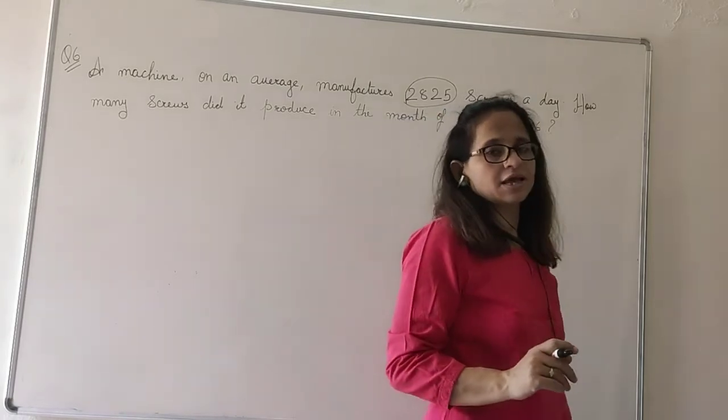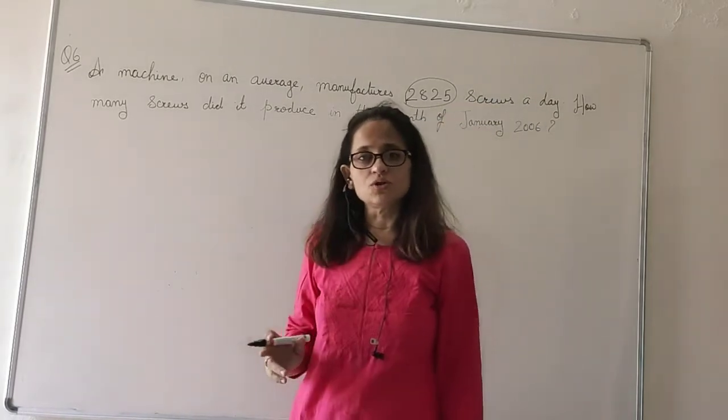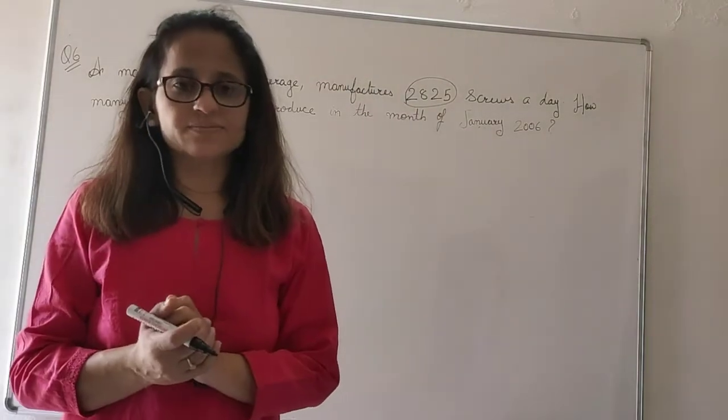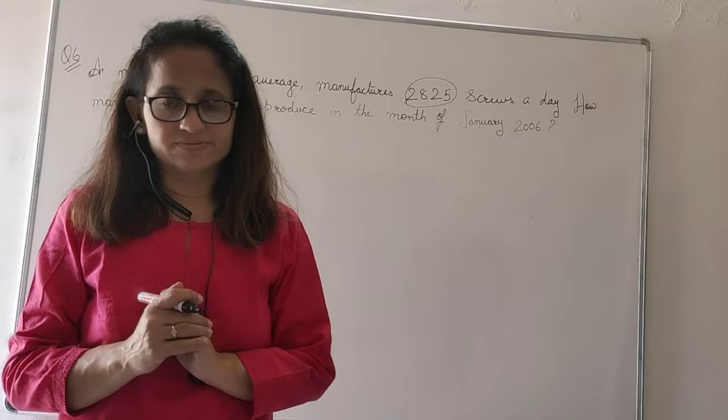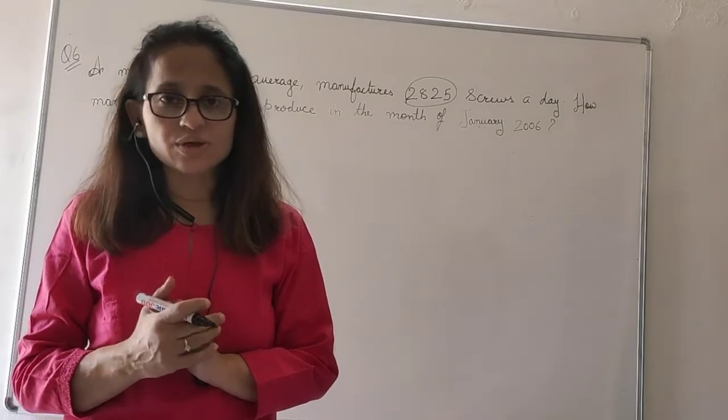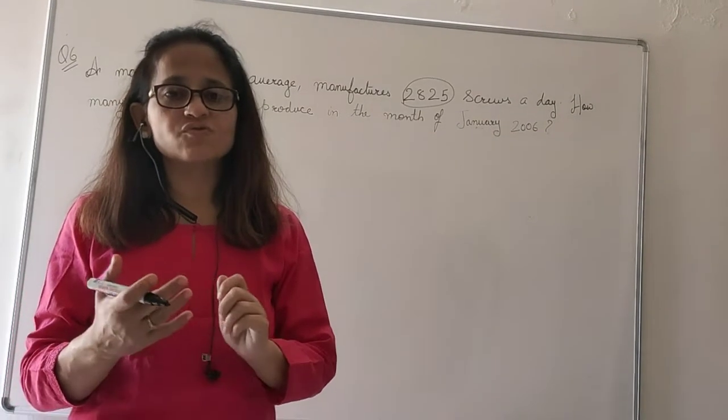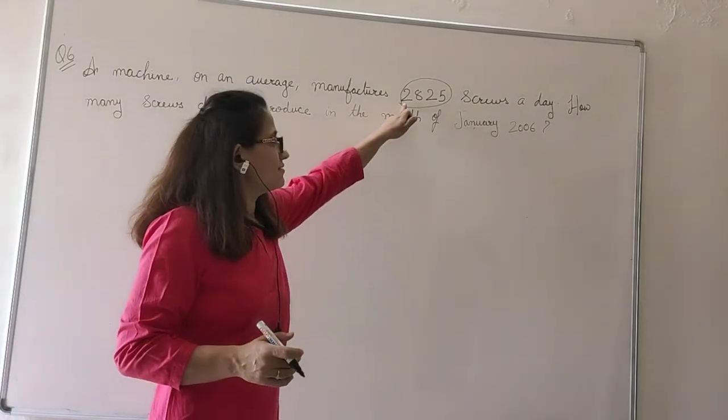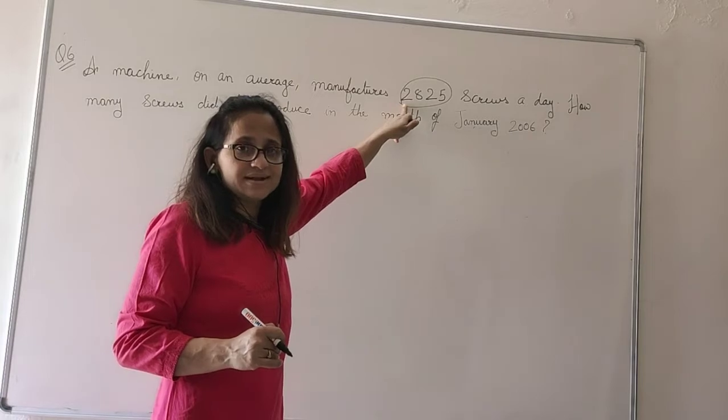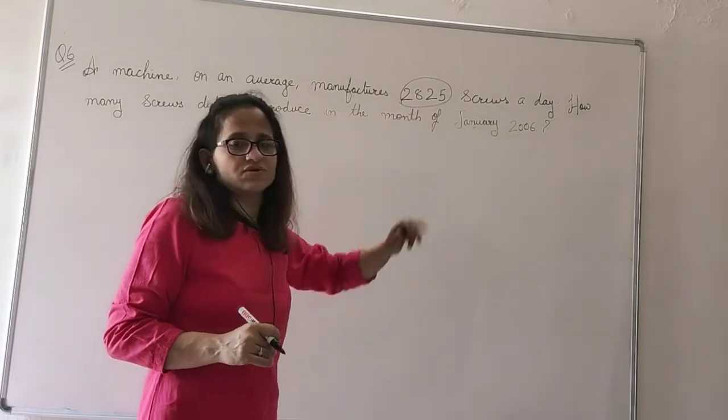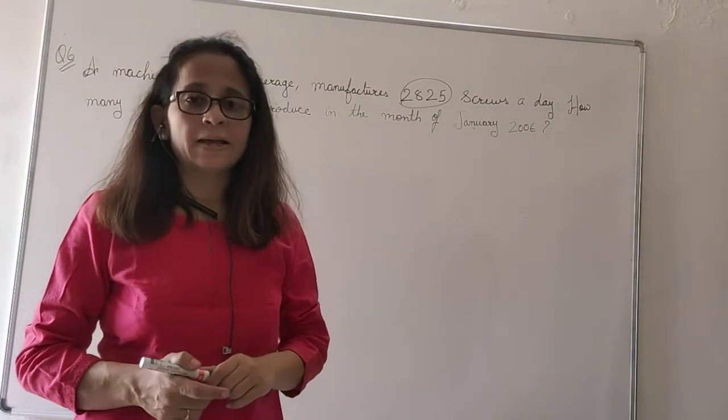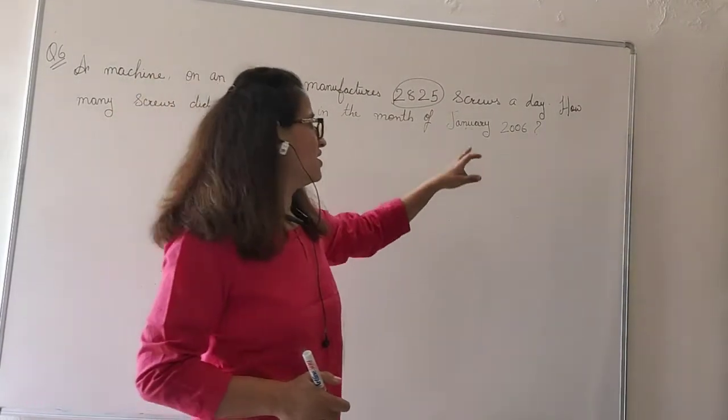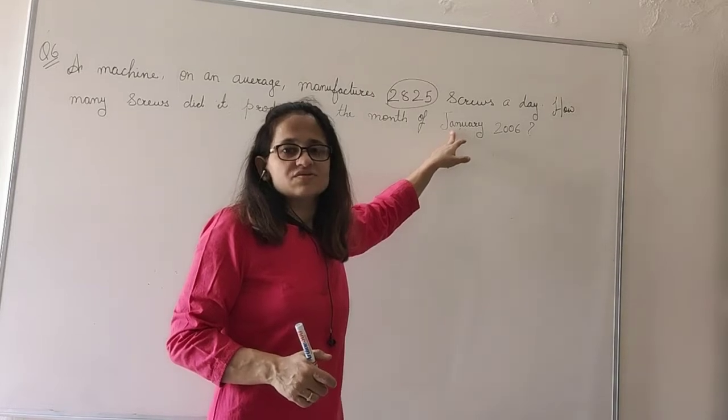Now we all know that January of any given year has 31 days. So what are we going to do here to find the number of screws? We will multiply the screws manufactured in one day with the number of days in January. But I can twist the question in the exam by giving, instead of January, if I give February.